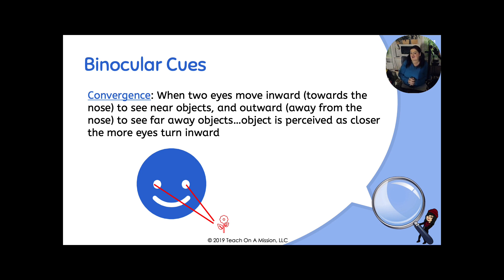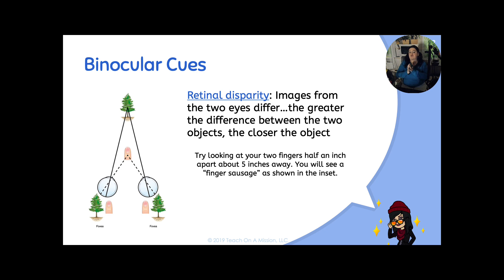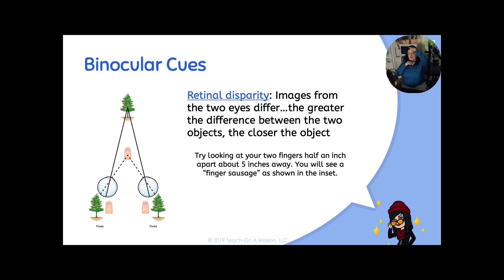Our last concept is retinal disparity. Retinal disparity is when the images from two eyes differ. The greater the difference between the two images, the closer the objects are. Try looking at your two fingers half an inch apart about five inches away from your face — you will see a finger sausage, as shown in the diagram with the trees. This goes along with the station exercise where you went one inch away to try to read the big letters and then seven feet away to try to read the tiny little letters. Retinal disparity is the concept you would be using to make out those different types of sizes of things as you're looking at them.